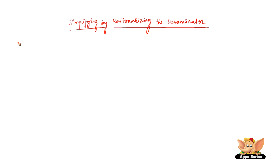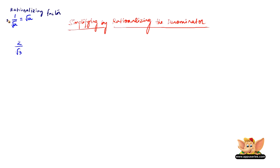Let us now do simplifying by rationalizing the denominator. So let us first simplify 2 by root 3. Before we go to 2 by root 3, I'll write a simple note here: the rationalizing factor of 1 by root a is root a.